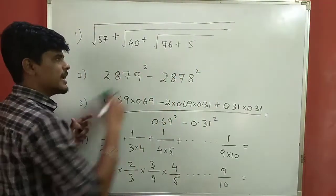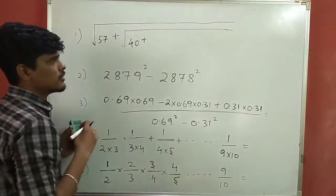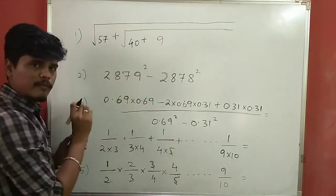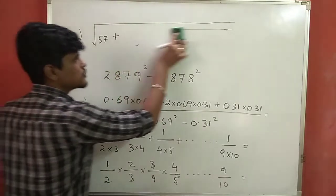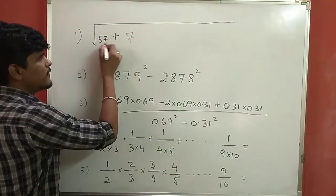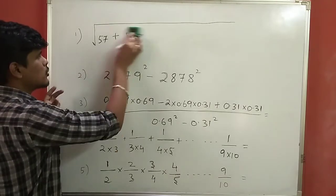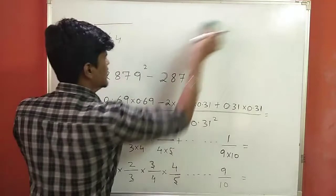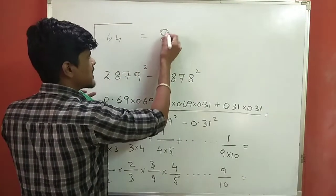76 plus 5 is 81. Taking the square root gives us 9. Then 40 plus 9 is 49. Taking the square root gives us 7. Next, 57 plus 7 is 64. So taking root 64, we get 8. The answer is 8.